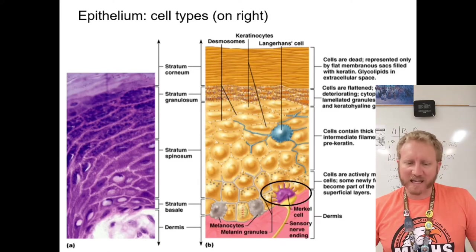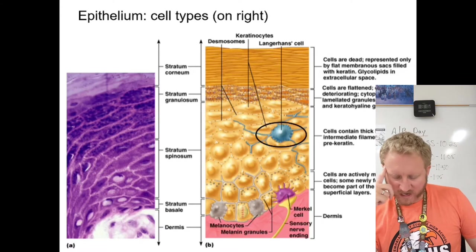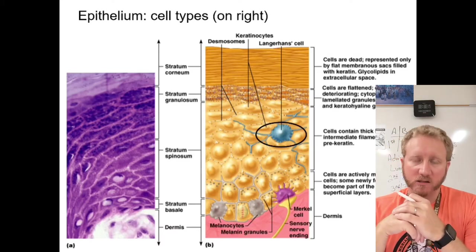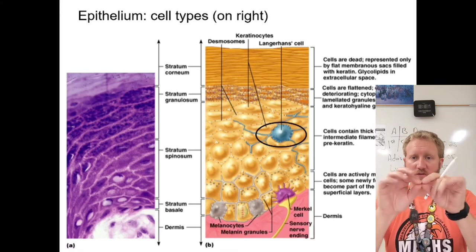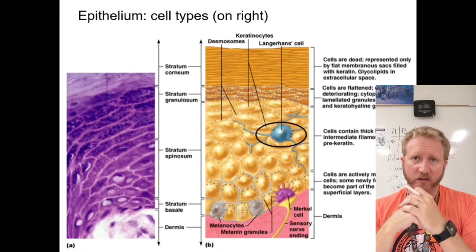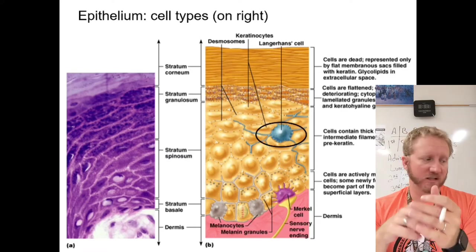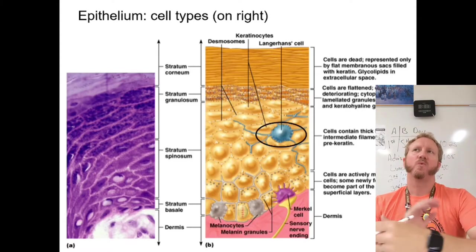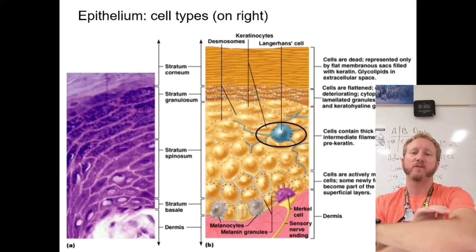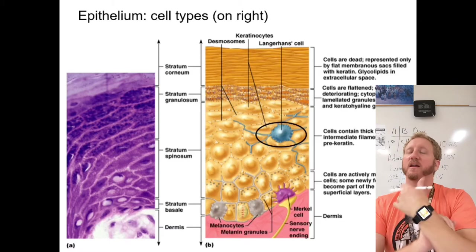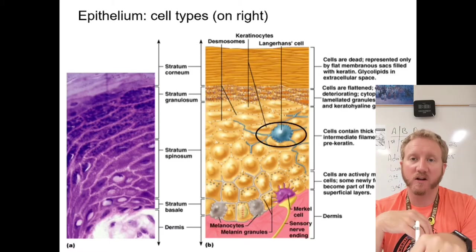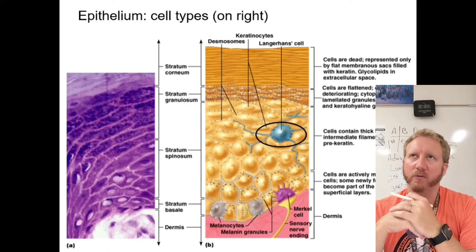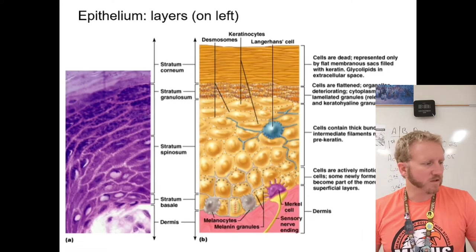Then we have Langerhans cells — the bluish ones with filaments extending off them. These are called dendritic cells, with long extensions coming off them. They're associated with the immune system as antigen-presenting cells. They sit in your tissues and when a foreign object enters — like from a cut — these Langerhans cells initiate the immune response and inflammation.